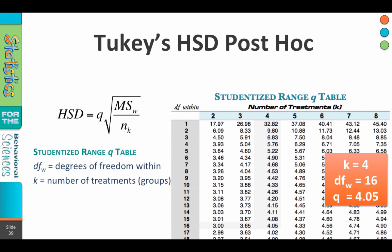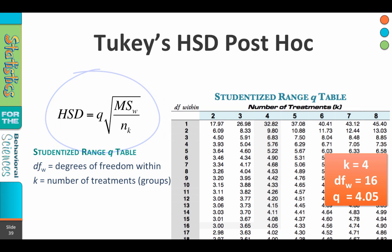Now Tukey's Post-Hoc Test involves this formula: it's Q times the square root of MSW divided by N sub K. Let's figure out Q first, and then we'll talk about what those other numbers represent.